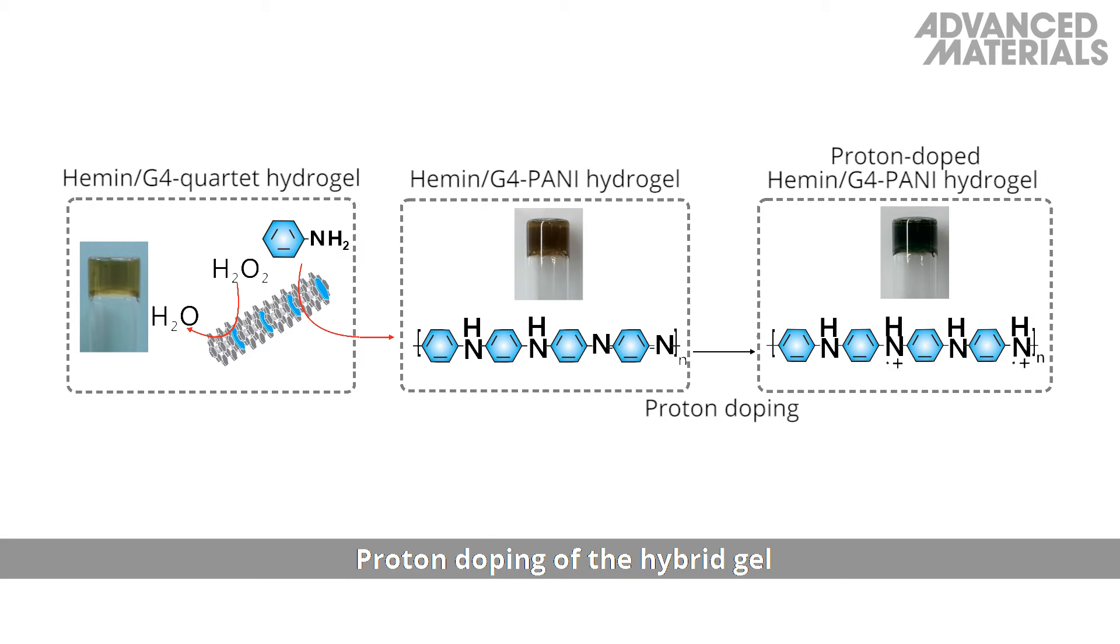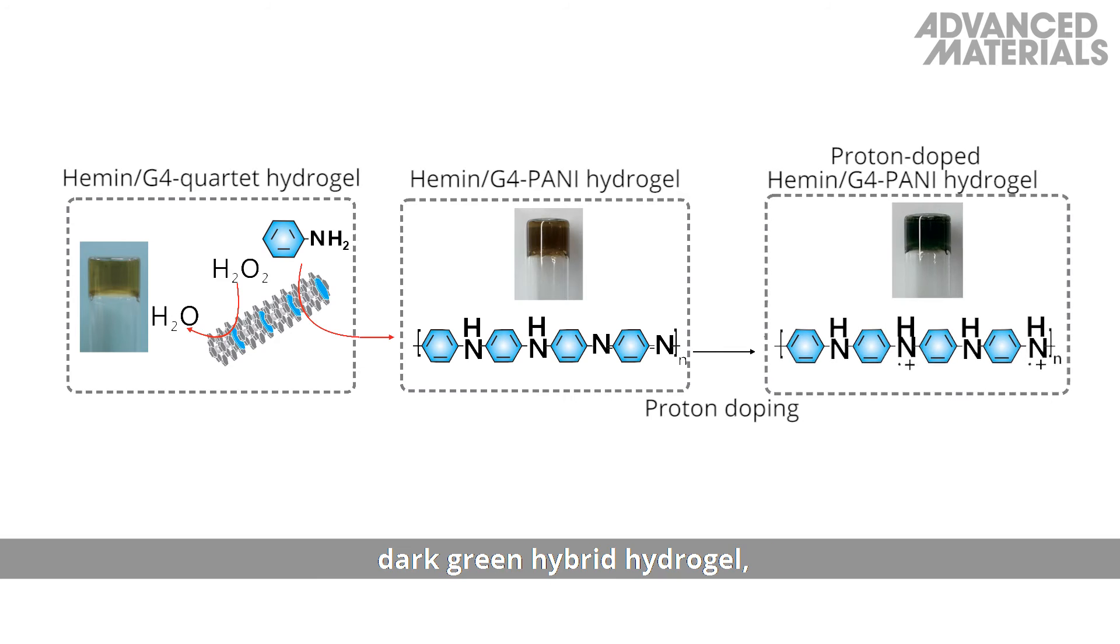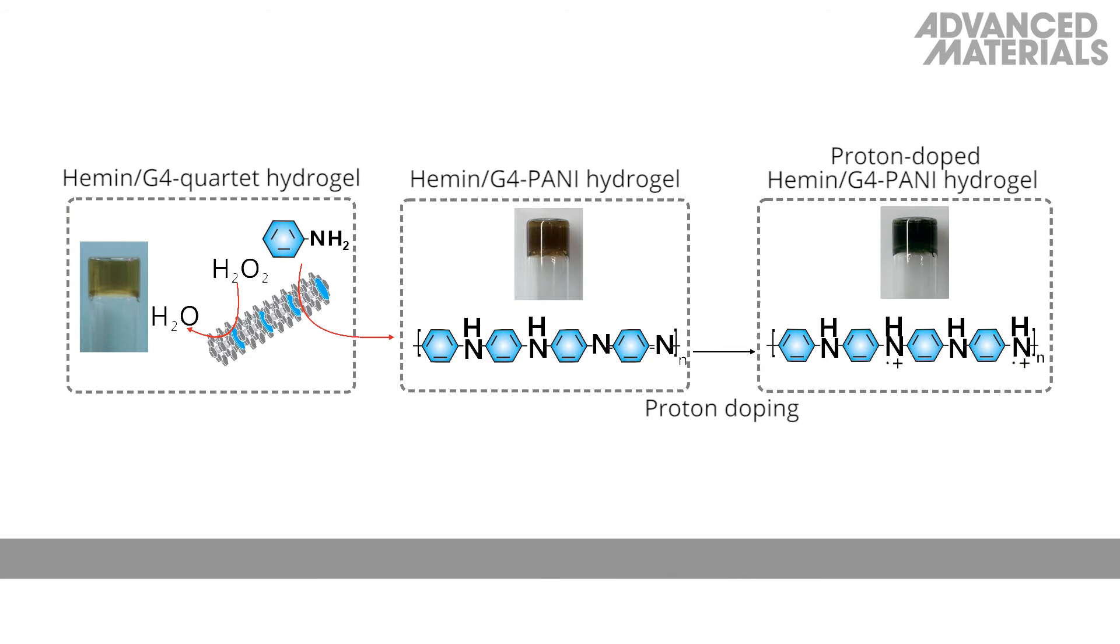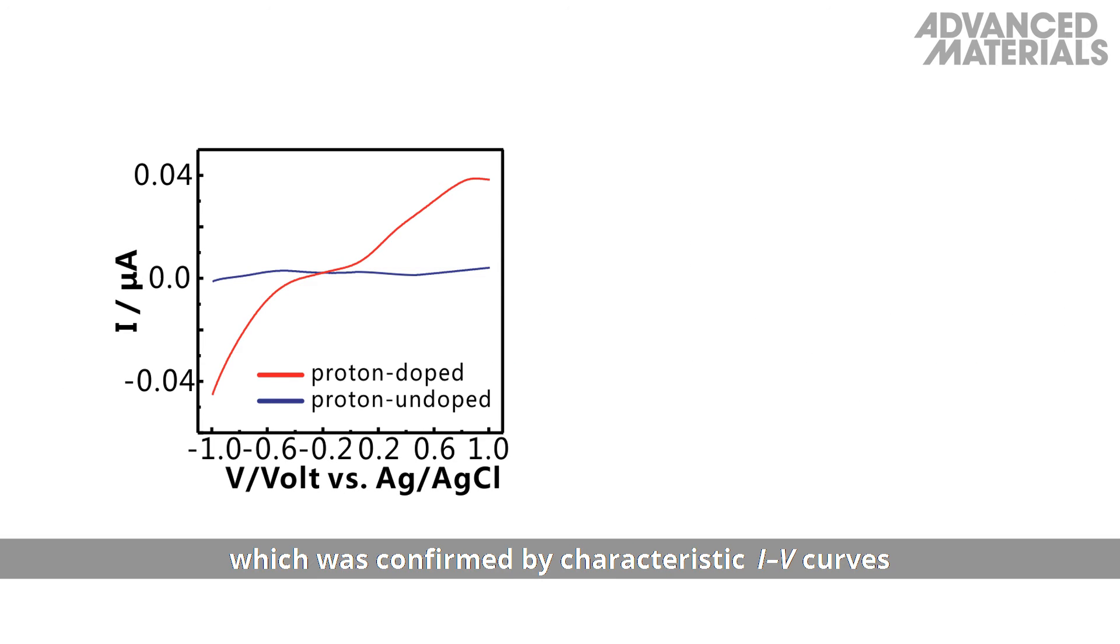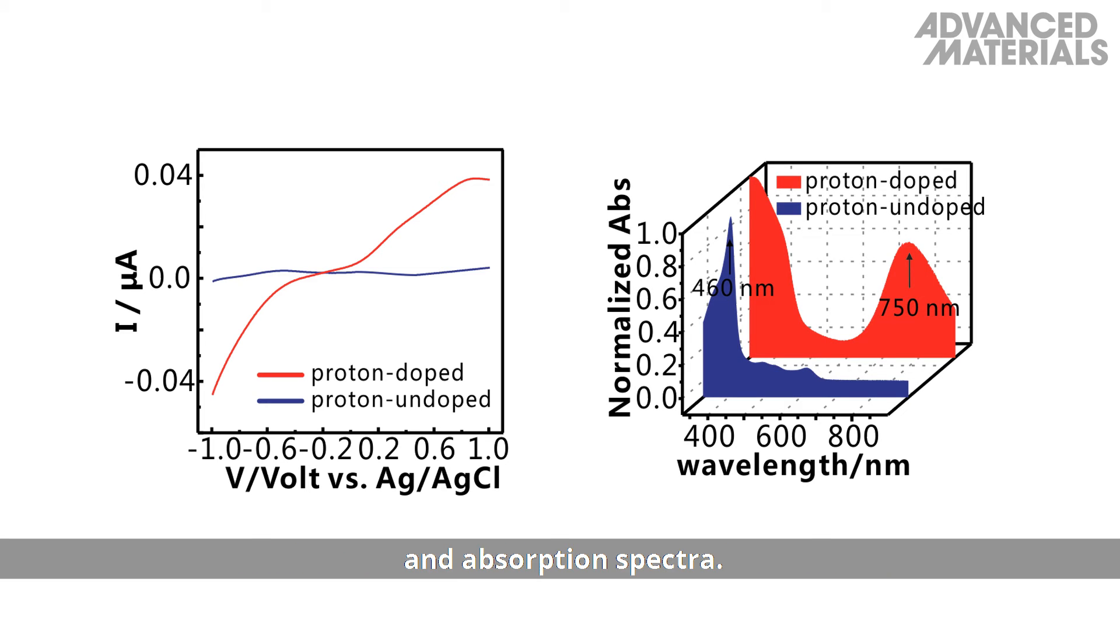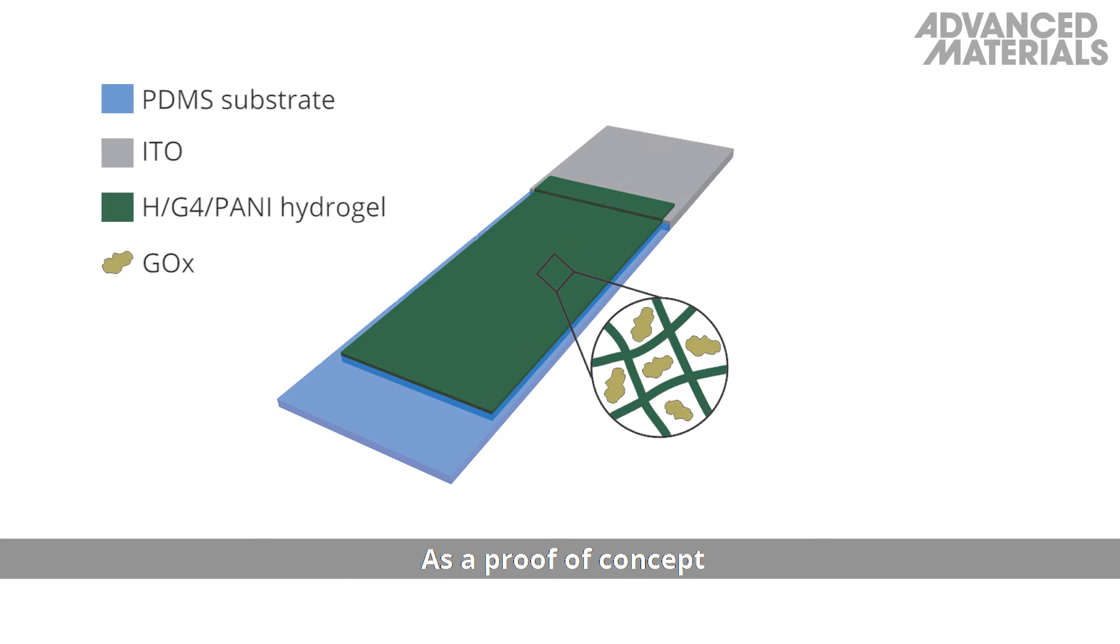Proton doping of the hybrid gel resulted in an electrically conductive dark green hybrid hydrogel, which was confirmed by characteristic IV curves and absorption spectra. As a proof of concept of the 3D printing and electrical material properties, the researchers fabricated a glucose biosensor.